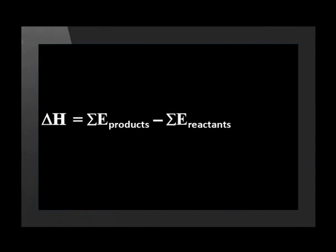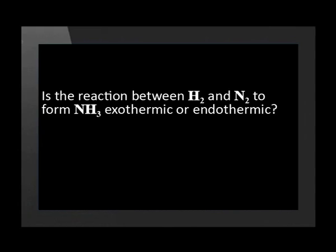To calculate the enthalpy change, we use the formula: delta H equals the sum of the energy of the bonds in the reactants minus the sum of the energy of the new bonds that form. This means we add up all the energies of the broken bonds, add up all the energies of the bonds that form, and subtract one from the other. Let's do an example. Bond energy is always given for a specific bond. Is the reaction between hydrogen and nitrogen to form ammonia exothermic or endothermic?